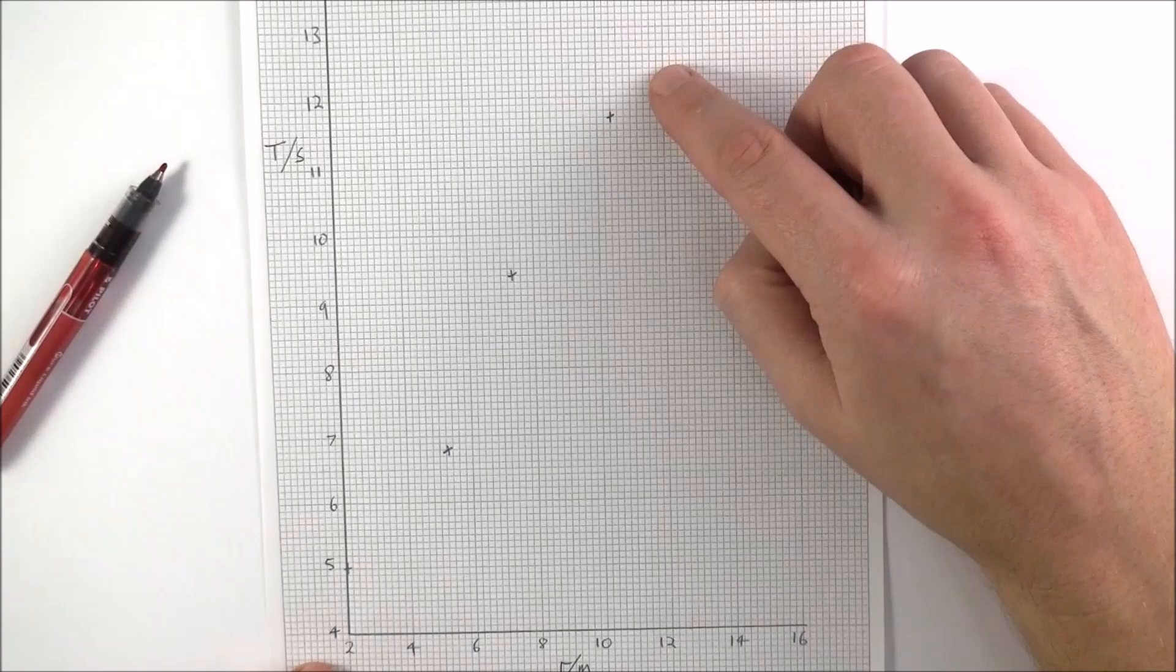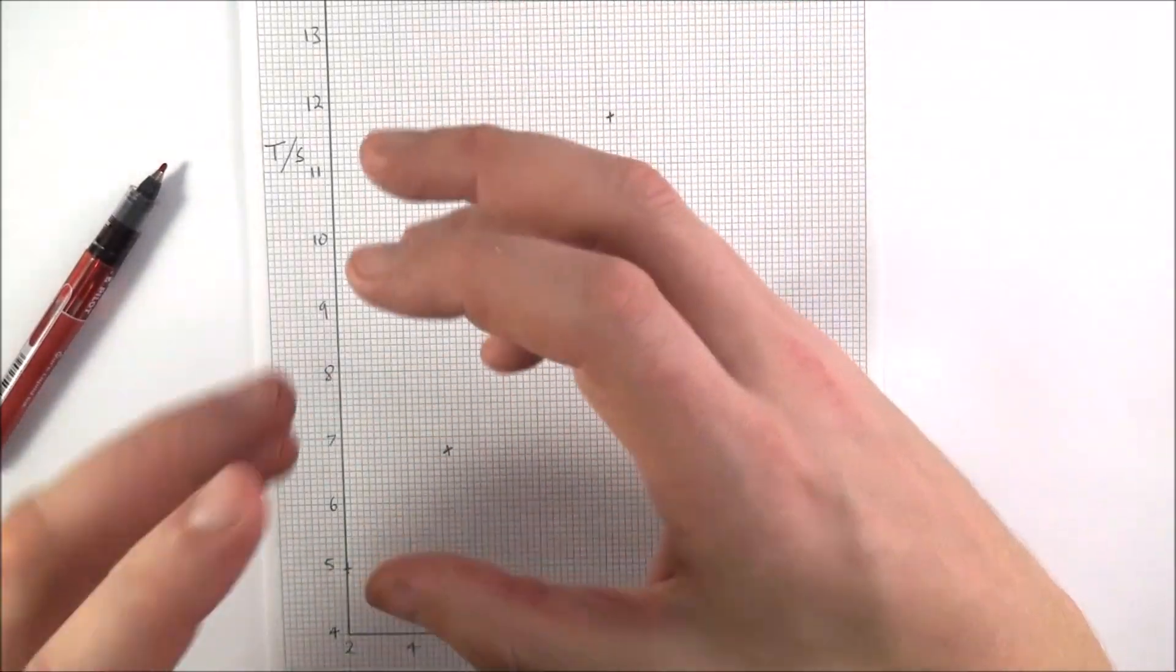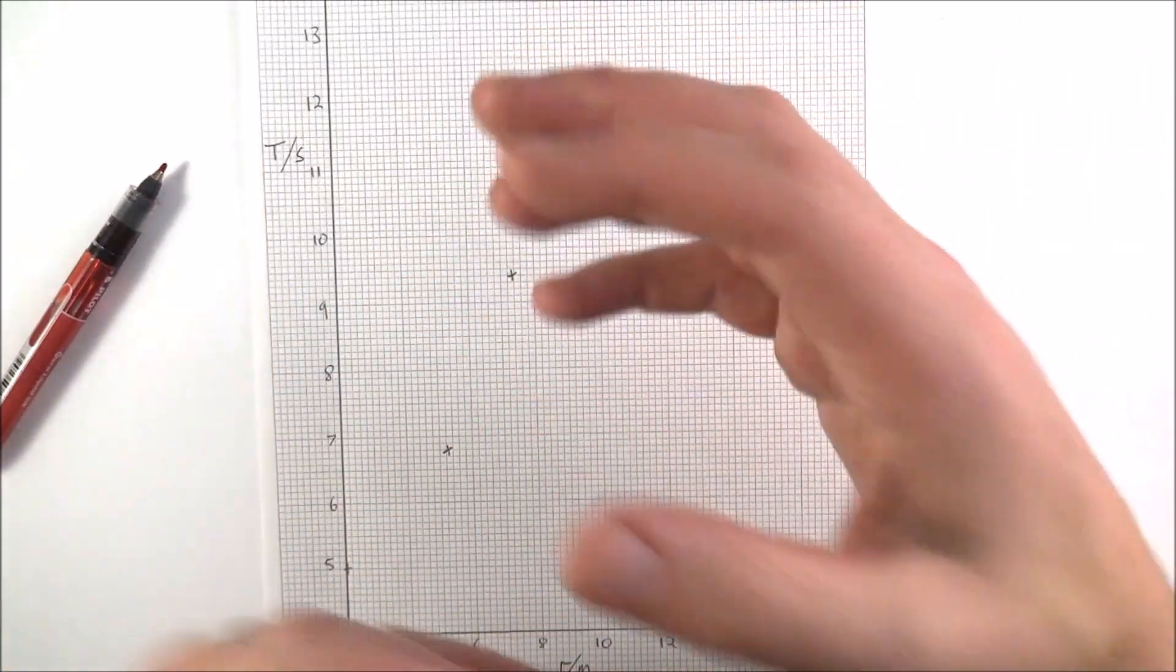We have a curved line of best fit and we can also have a straight line. And it's often the straight line which is more useful because it allows us to work out a gradient and maybe find a constant.